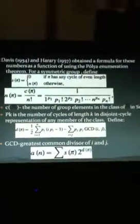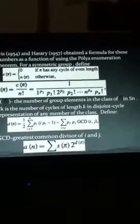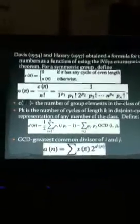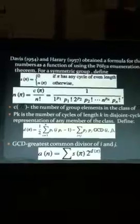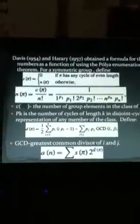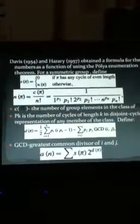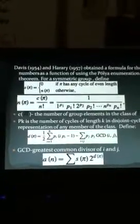Davis and Harary obtained a formula for the number of tournaments as a function using the Pólya enumeration theorem. This gets a little complex, but in this formula, c(π) is the number of group elements in the class of π in S_n, and p_k is the number of cycles of length k in the disjoint cycle representation of a member of the class. This is how you find the enumeration.